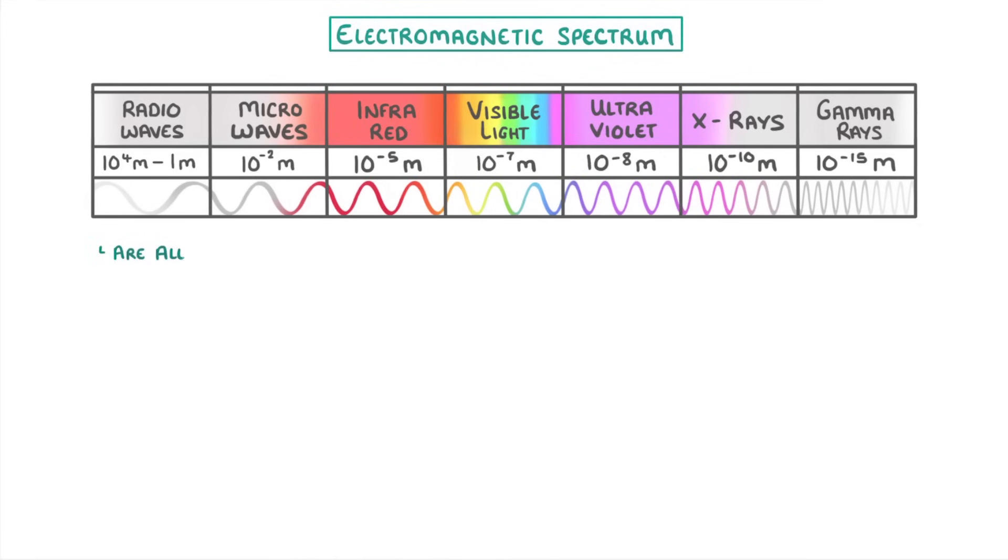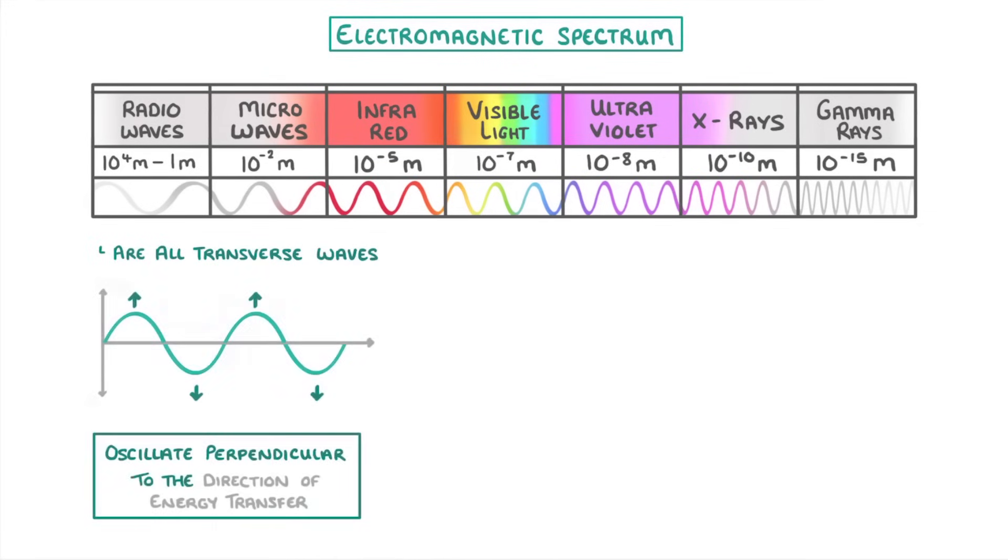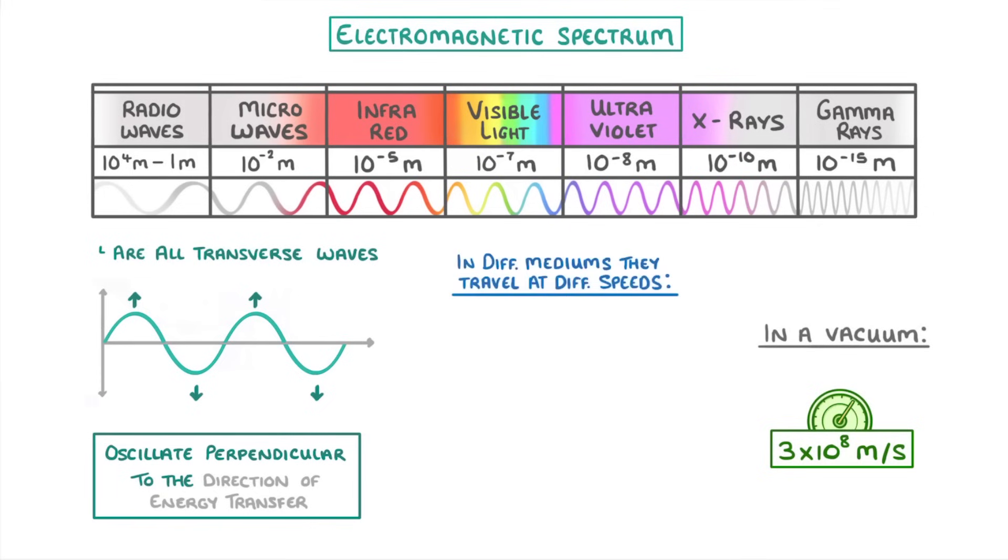EM waves are all transverse waves, which means they oscillate perpendicular to the direction of energy transfer, so up and down. When they're in a vacuum, they all travel at exactly the same speed of 3 times 10 to the 8 meters per second. When they're in different mediums though, they will travel at different speeds, and this can lead to refraction, which is where the wave changes direction.